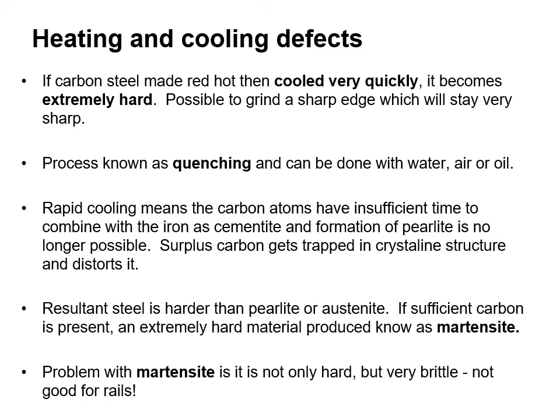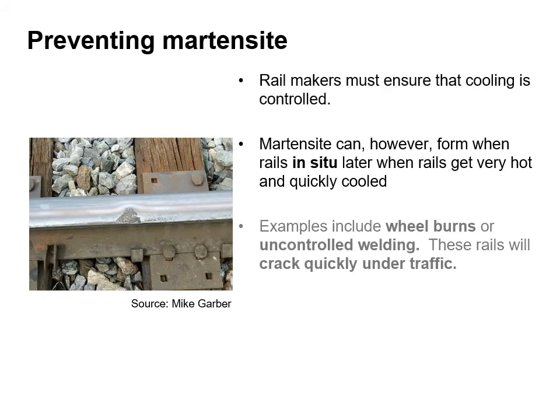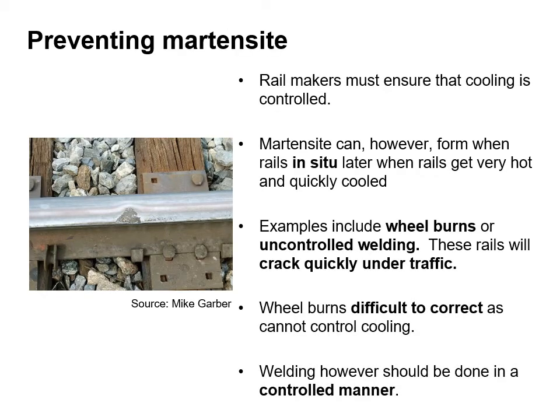If sufficient carbon is present, an extremely hard material known as martensite is formed. The problem with martensite is it's not only hard but very brittle, so that's not good for rails. Rail manufacturers must ensure that cooling is controlled. Martensite can occur when rails are in situ — for example when they get very hot and then are quickly cooled. Examples include wheel burns or uncontrolled welding, and these rails will crack very quickly under traffic.